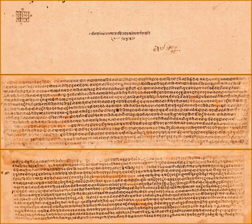'Many a one, although seeing, do not see speech; many a one, although hearing, do not hear her; and many a one — she spreads out her body like a wife desiring her husband. The meaning of speech is its fruit and flower.' — Yaska, Nirukta 1.18–1.20.